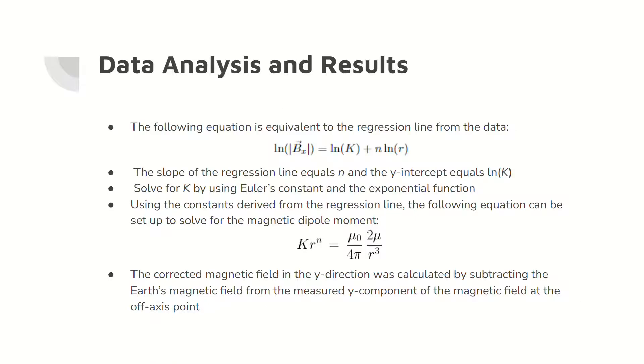Using the top equation as a general equation for the line of regression, the values for n and k were determined. The equation for a bar magnet with the variable k and the Biot-Savart law for a magnetic dipole was then set up as an equation to solve for the magnetic dipole moment.